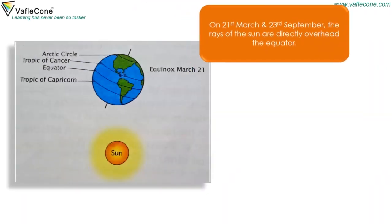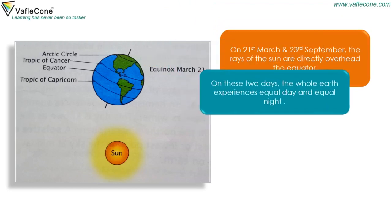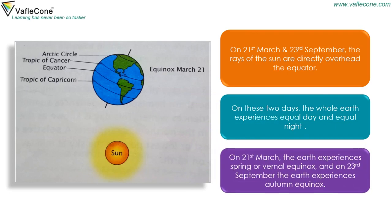On 21st March and 23rd September, the rays of the sun are directly overhead the equator. On these two days, the whole Earth experiences equal day and equal night. On 21st March, the Earth experiences spring or vernal equinox, and on 23rd September, the Earth experiences autumn equinox.